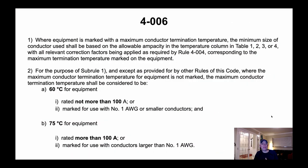Sub-rule 2 states: where the maximum conductor termination temperature for equipment is not marked, the maximum termination temperature shall be considered to be 60°C for equipment rated at not more than 100 amps or marked for use with No. 1 AWG or smaller conductors, and 75°C for equipment rated more than 100 amps or marked for use with conductors larger than No. 1. So up to and including 100 amps, treat it as 60°C; exceeding 100 amps, treat it as 75°C.